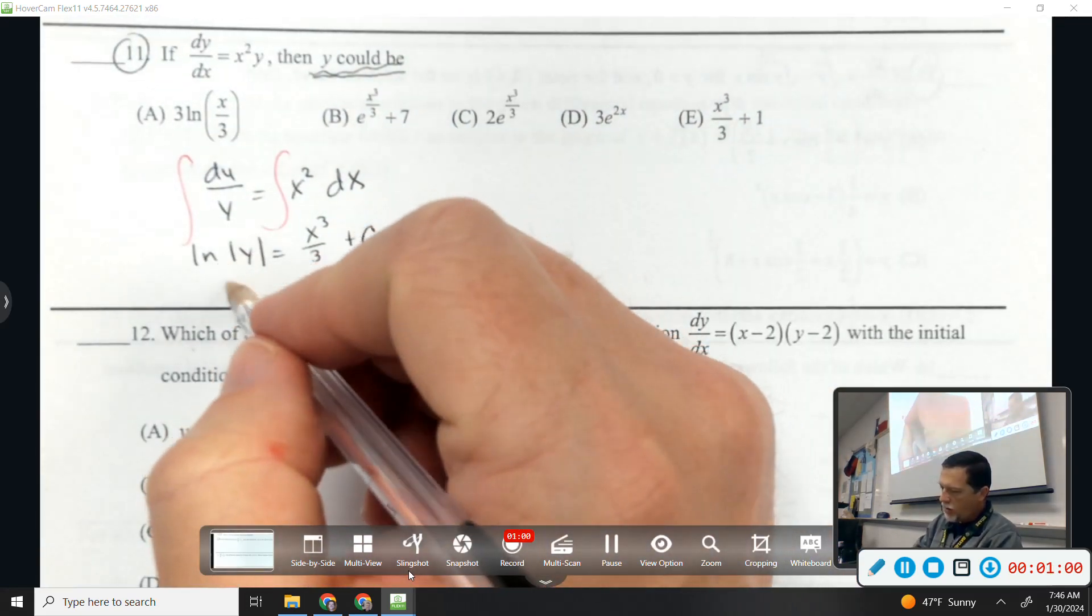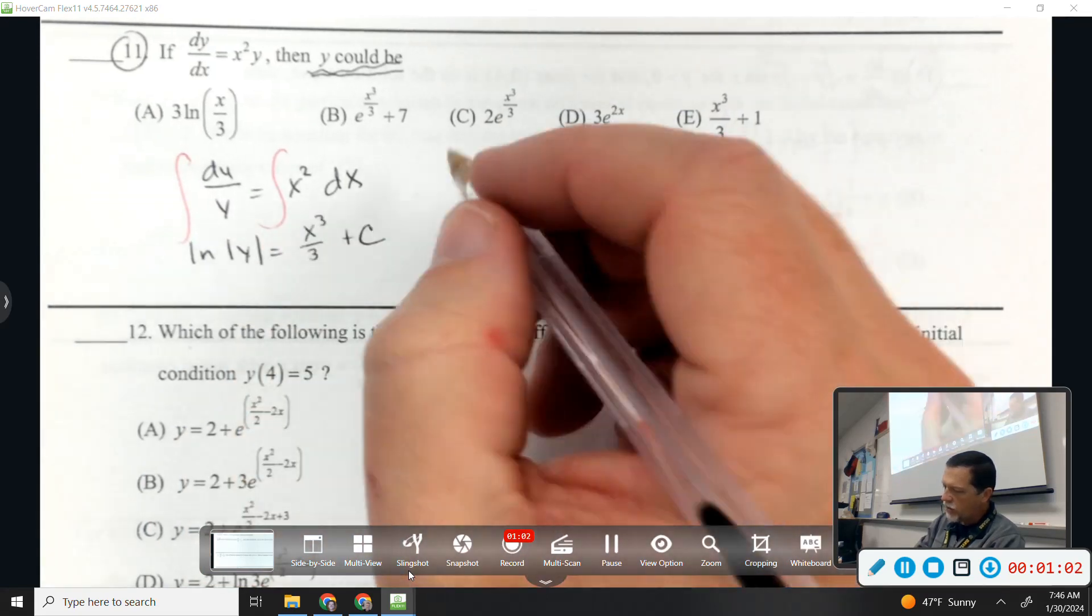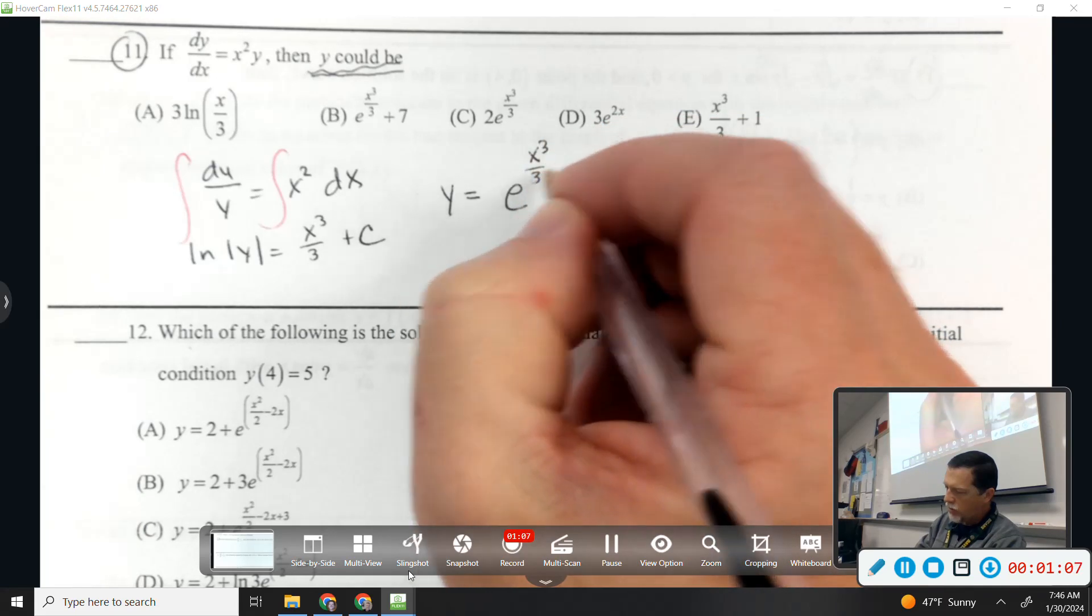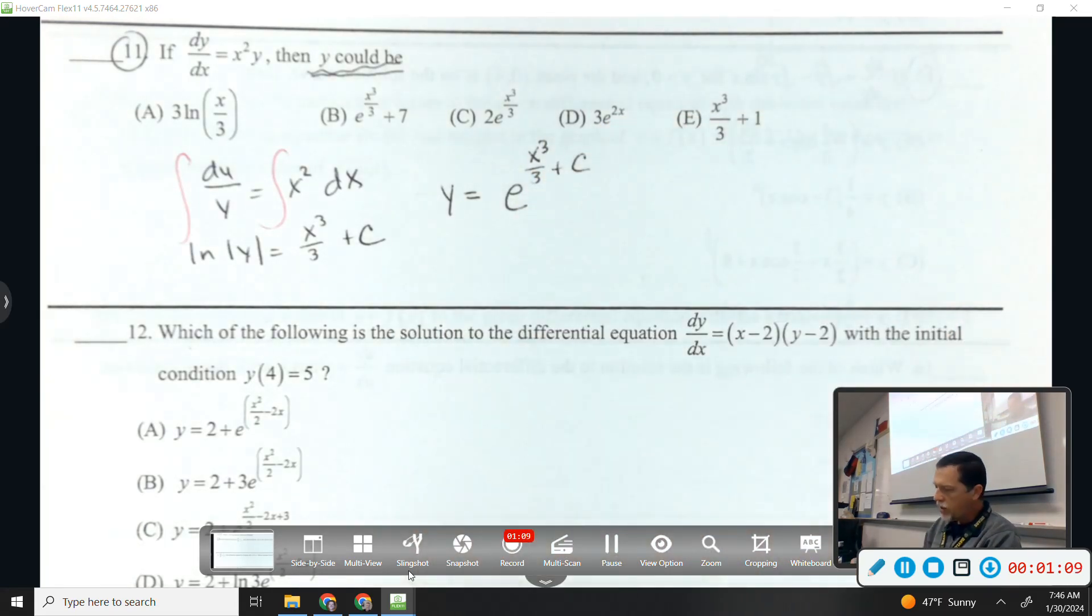I think I would fish hook to get this all for y, so y equals e to the x cubed over 3 plus c, and now I think I start looking for my answers.